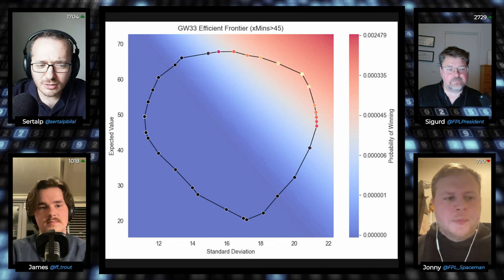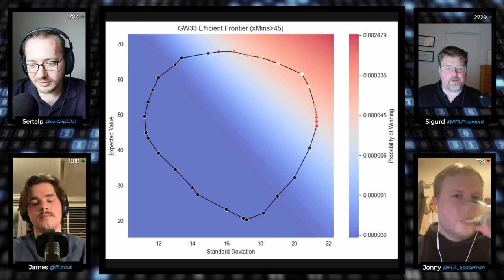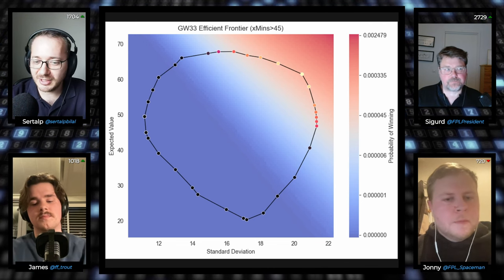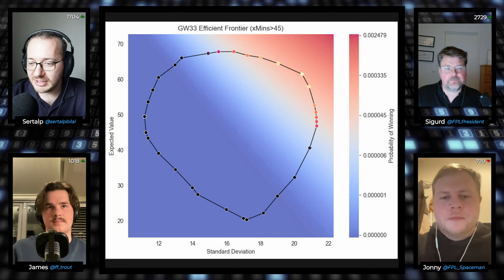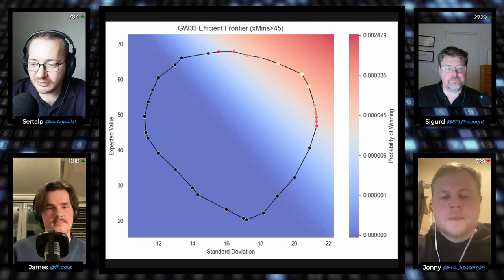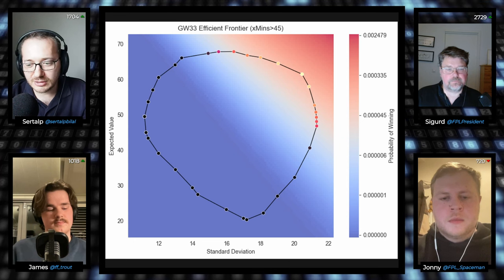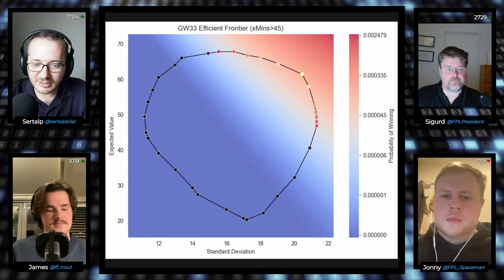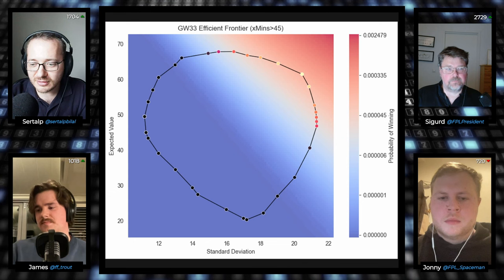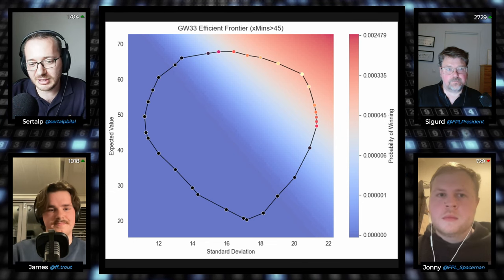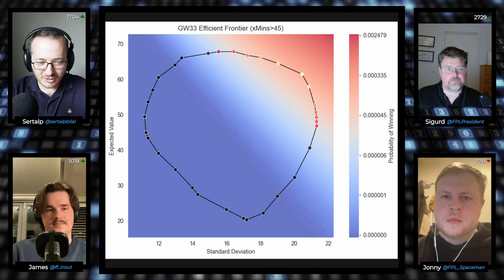That's why a lot of teams that have done quite well have been loading on one defense. Also worth mentioning: if the field is playing FPL really badly, then maximizing EV might be enough to win it. But if everyone is doing quite well, you might want to take even more risk. If we know roughly how many points the number one will get, you can estimate how much variance you need to have.